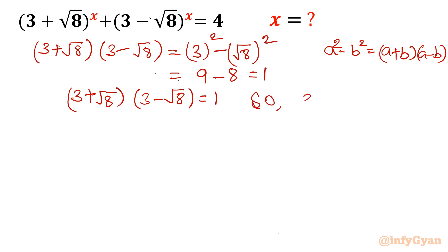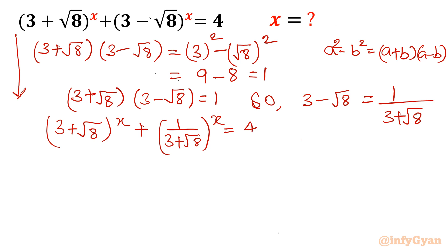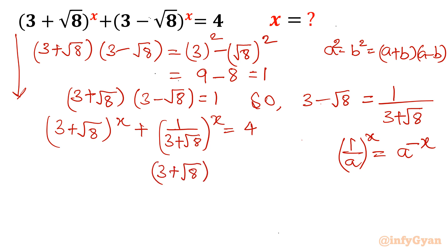So (3 - √8) can be written in rational form as 1/(3 + √8). The equation then becomes (3 + √8)^x + 1/(3 + √8)^x = 4. Now, by exponent property, 1/a^x can be written as a^(-x). So this becomes (3 + √8)^x + (3 + √8)^(-x) = 4.